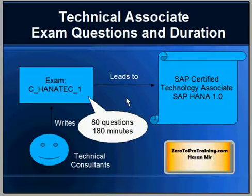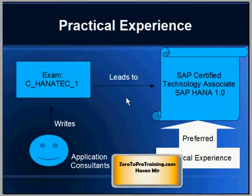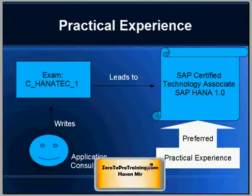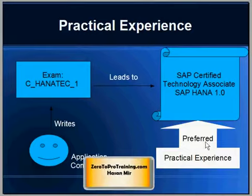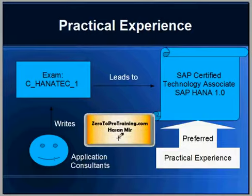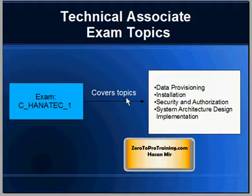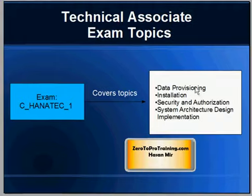You have 80 questions and 180 minutes. In associate level certifications, practical experience is preferred but not mandatory. However, there will be some questions in the exam that will expect that you have some practical experience. Core topics addressed in the exam include data provisioning, installation, security and authorization, and system architecture — though this is not a complete list, just a few examples.